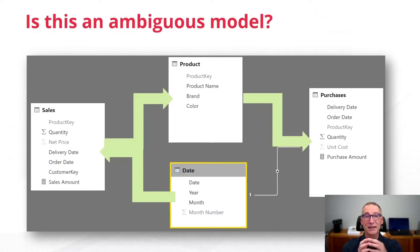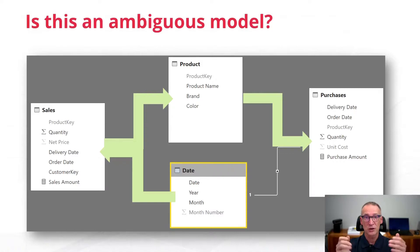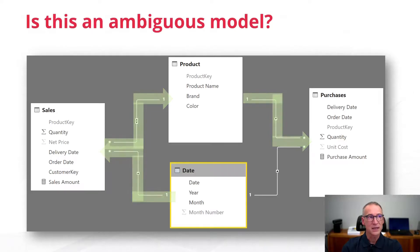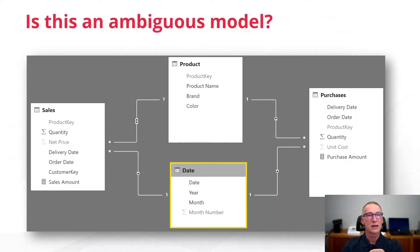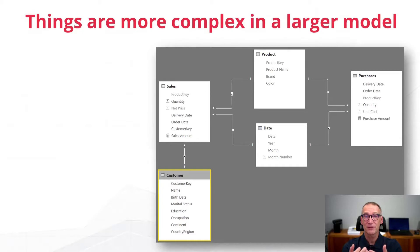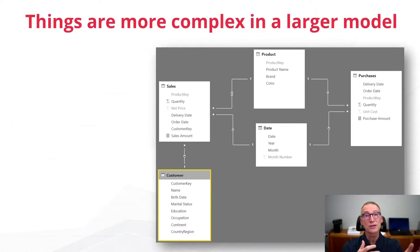If we only had four tables, that would not be an issue. The problem is that in our model we no longer have only four tables — we have five tables, because we also have Customer. And the presence of Customer, of course, increases the complexity of resolving the scenario.